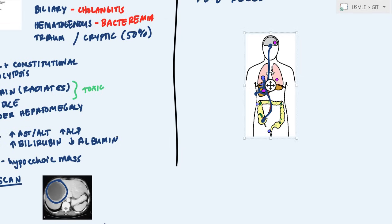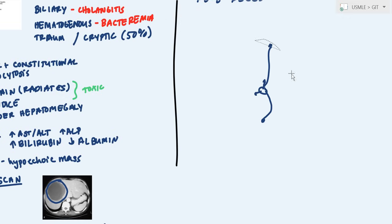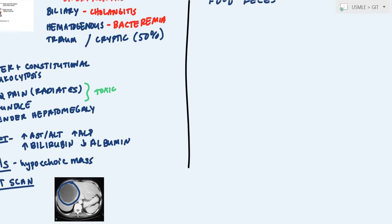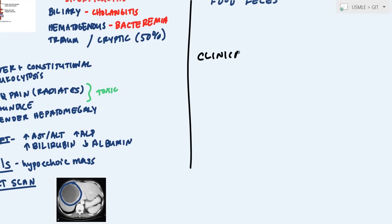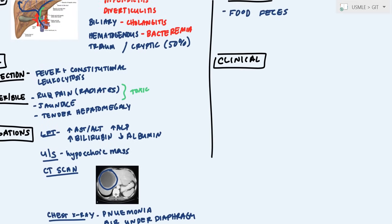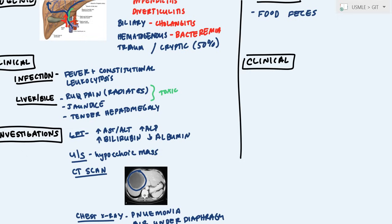When we're looking at the clinical symptoms, what you'll find is it's going to be the same thing with regards to signs of infection, which is going to be your fever, constitutional symptoms, and leukocytosis. You're also going to have your symptoms related to the liver and bile. So that's going to be your right upper quadrant pain that radiates, jaundice, tender hepatomegaly. But there's a few extra symptoms that you don't see. These you're going to get in both amoebic, hydatid, and pyogenic bacteria. But here are three symptoms that you might not see in other ones.